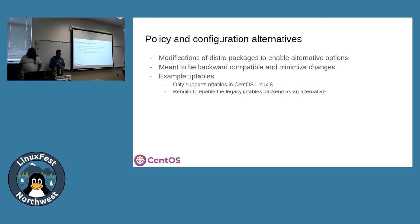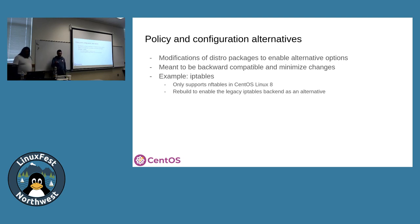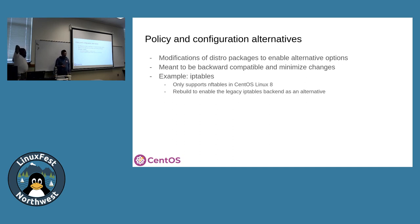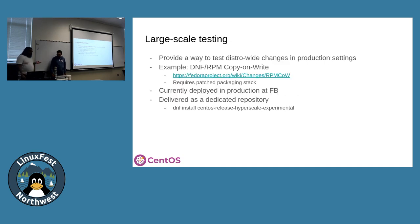Beyond new or updated package versions, we also ship packages with policy or configuration deviations. An early example was iptables — CentOS Linux 8 and Stream 8 only had the nftables backend, but at Meta we needed the legacy backend. We shipped a version of iptables with that backend enabled, packaged as a drop-in replacement, so if you were using nftables nothing changed, but you also had the ability to use the legacy backend. For Stream 9 we were able to do this in EPEL, which was a much cleaner approach. We try to put things into EPEL first before putting them into the SIG space, to maximize community benefit.